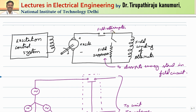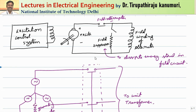Even if you remove the field interrupter, that is not going to be sufficient because the energy stored in the magnetic field cannot be removed immediately. In order to remove the energy stored in the magnetic field so that the flux will die out at a faster rate, a field suppressor resistor is used. Whenever the field interrupter switch is opened, this suppressor resistor is automatically connected. Whatever energy is stored in the field will be suppressed by this field suppressor, so the flux dies at a faster rate and the alternator will be safe.